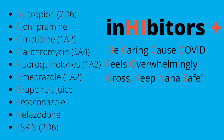The following are the inhibitors: bupropion, clomipramine, cimetidine, clarithromycin, fluoroquinolones, omeprazole, grapefruit juice, ketoconazole, nefazodone, and SSRIs. To help you remember the inhibitors, here is a mnemonic: 'Be Caring Because Covid Feels Overwhelmingly Gross, Keep Nana Safe.' The first letter of each word represents the inhibitors.